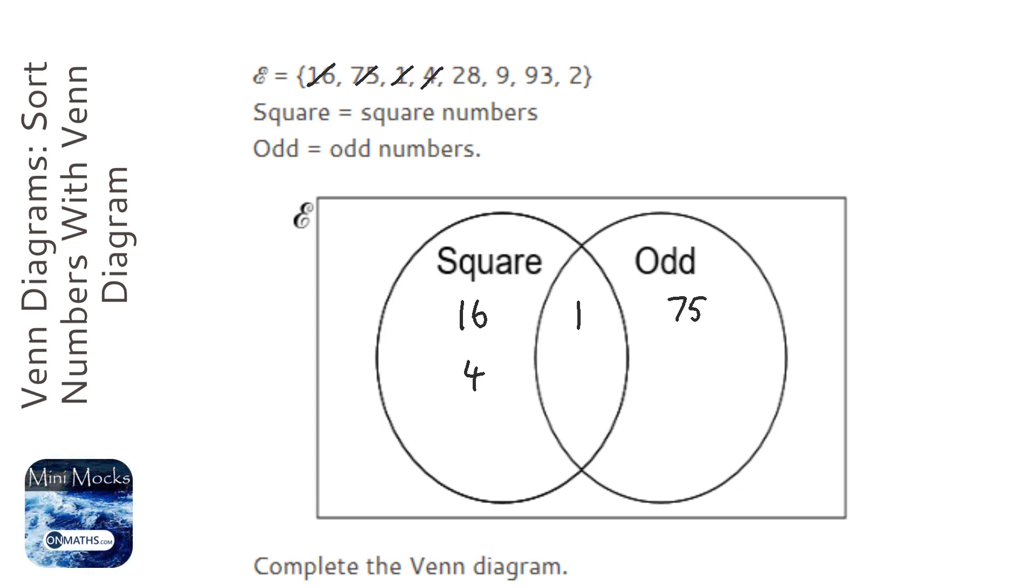28 is not a square number and it's not odd, so that's going to go out here. 9 is a square number and it's odd. That's going to go there.